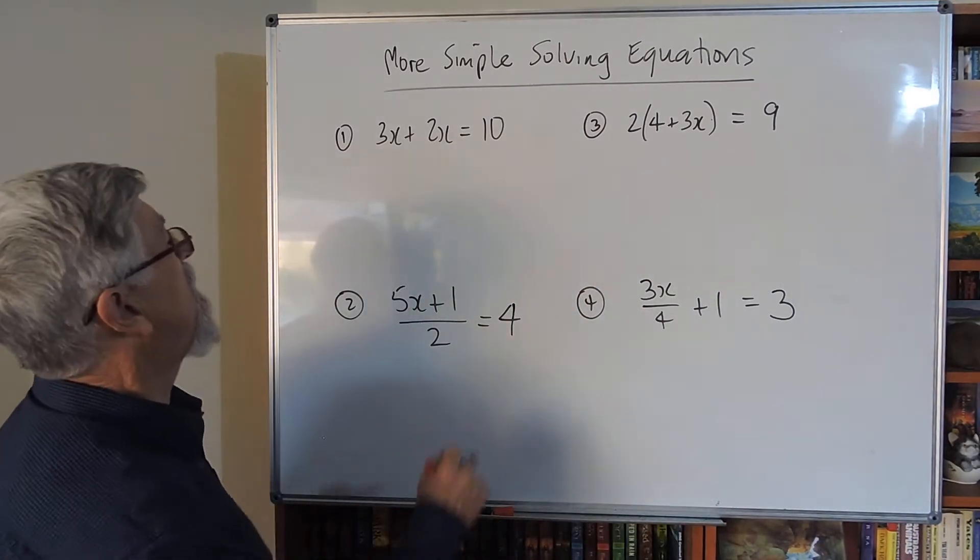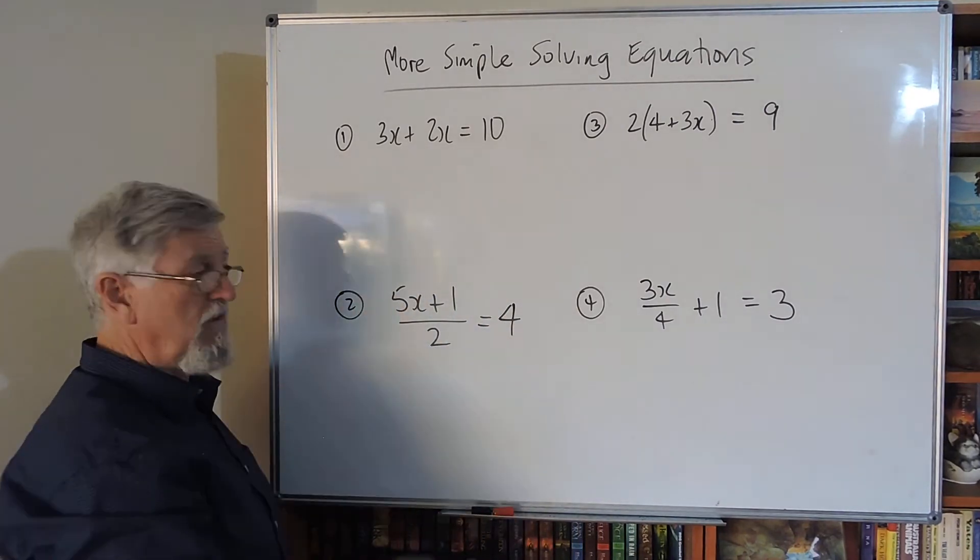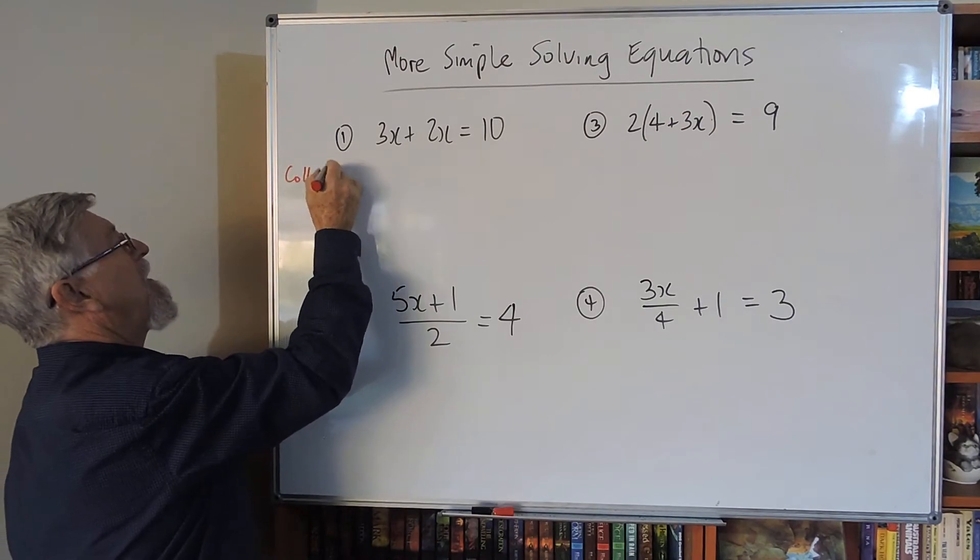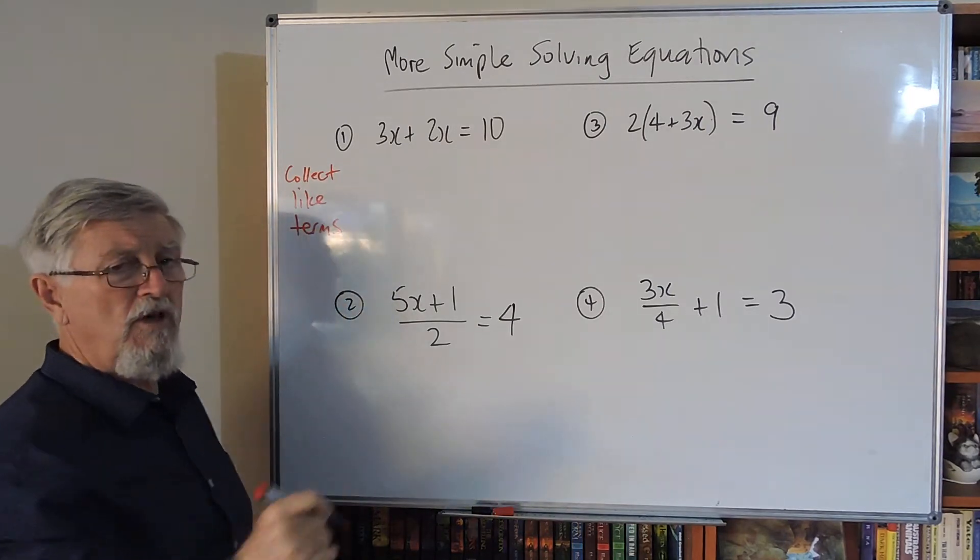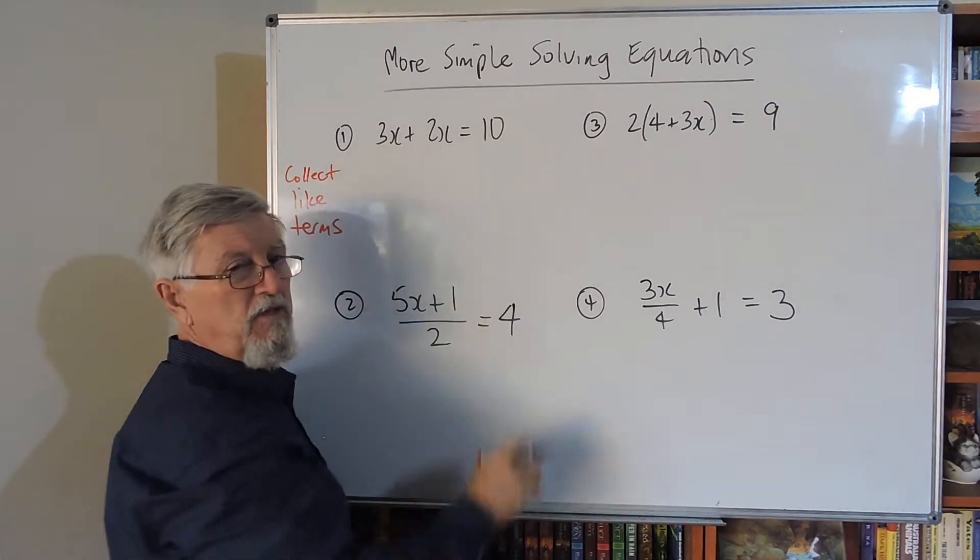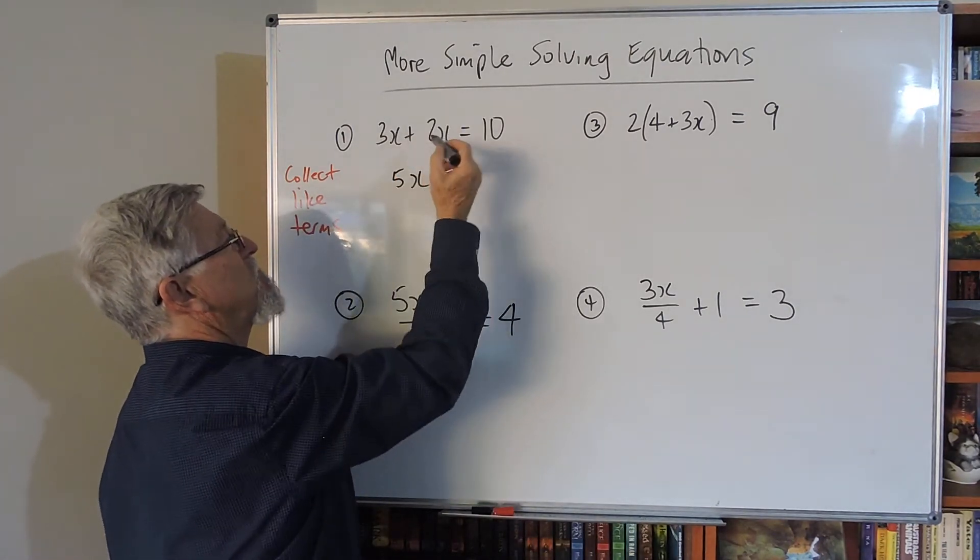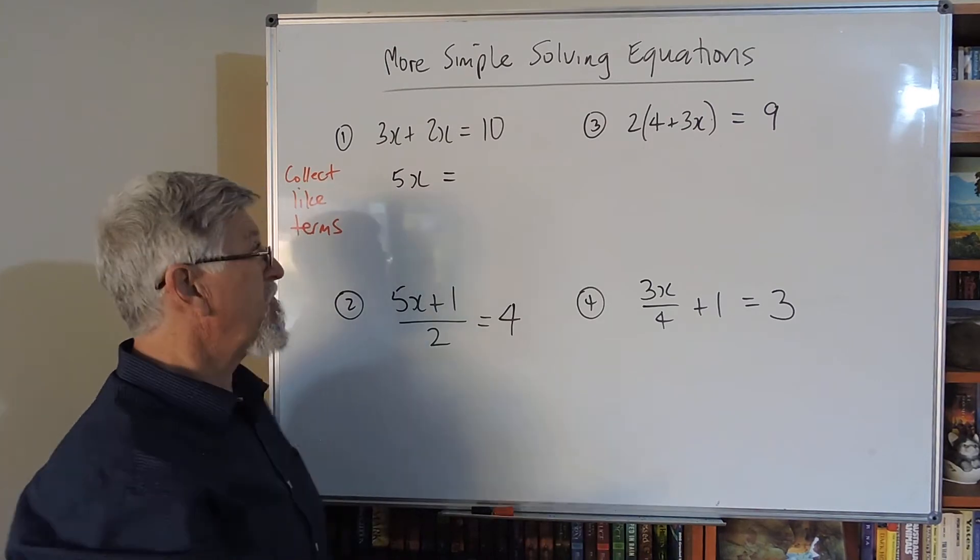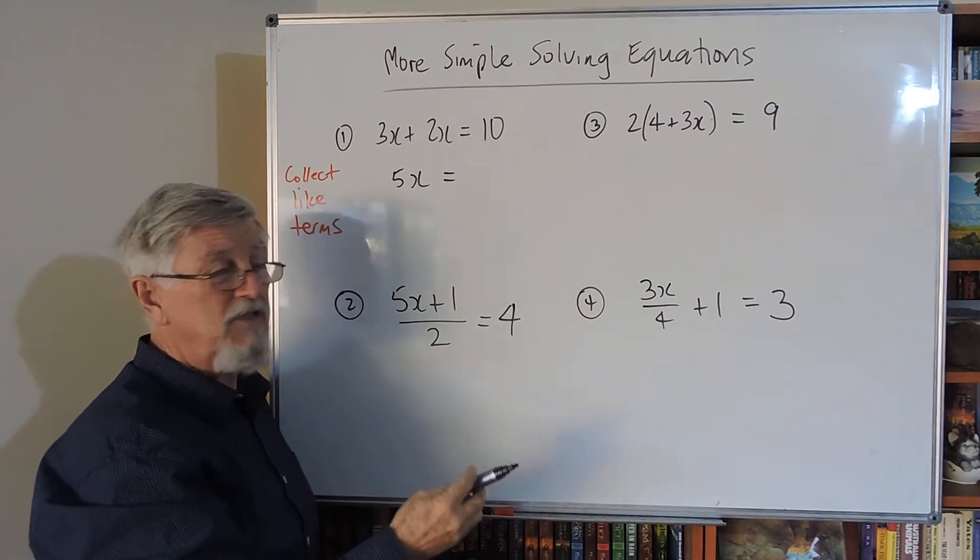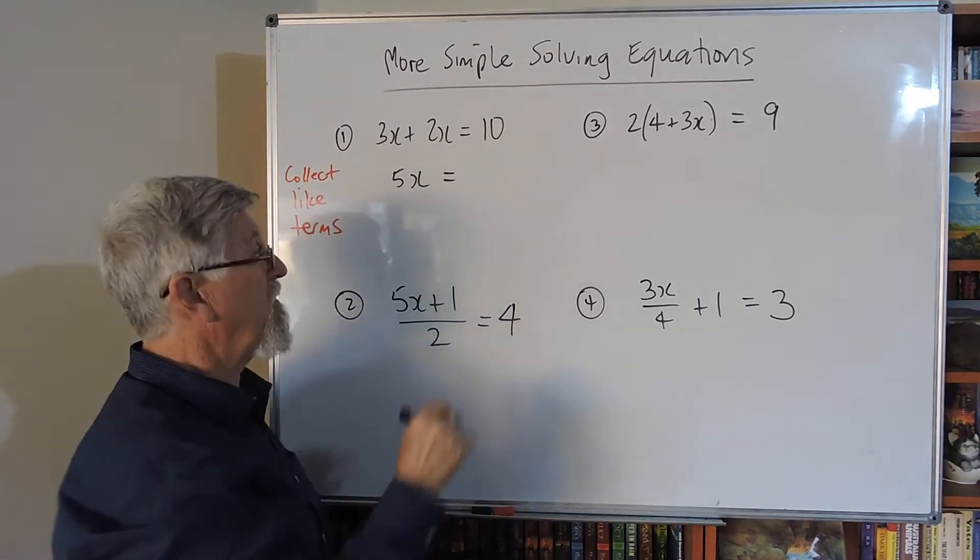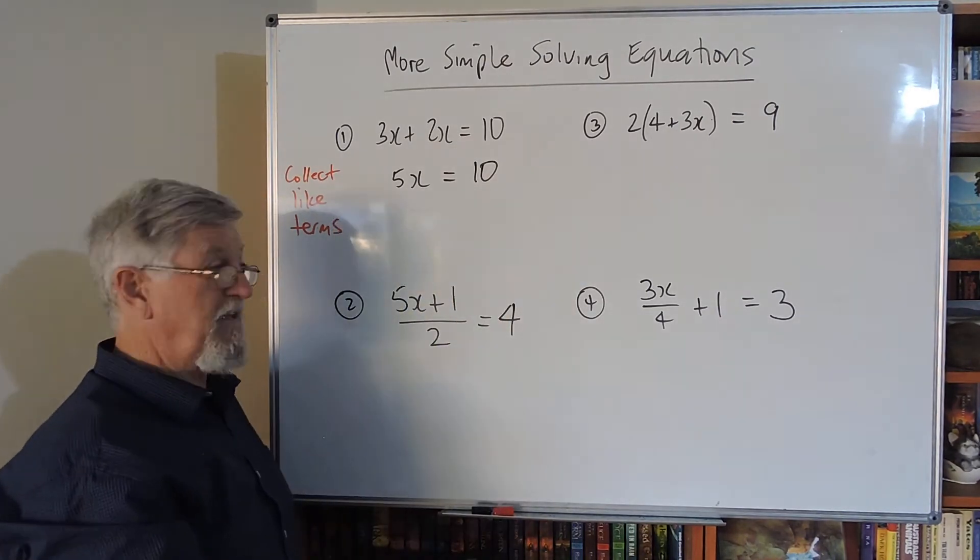Let's look at this one: 3x + 2x = 10. This is called collecting like terms. Maybe you don't fully understand collecting like terms or don't realize you can just go 3x plus 2x is 5x. If you were trying to guess the answer, you could think of it as three x and two x making five x, then guess that 5 times what is 10.